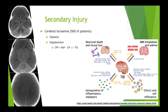Looking at secondary injury in terms of cerebral ischemia - this is a nicer CT scan image of the cerebellar sparing I was talking about. We often see this in patients who have sustained hypoxic brain injuries or had a prolonged period of hypotension - sparing of the posterior circulation with complete dark cerebral hemispheres. Secondary brain injury happens through many ways after an insult.